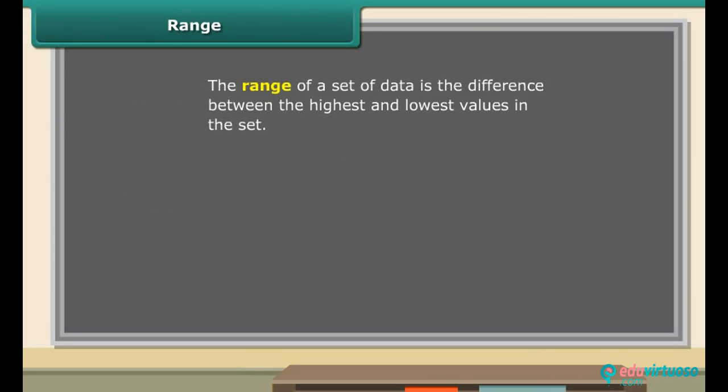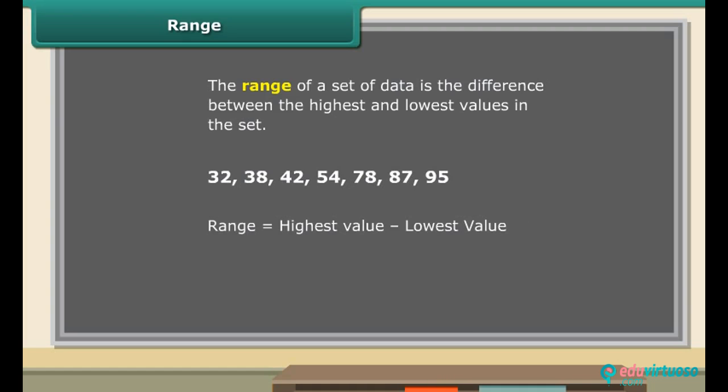The range of a set of data is the difference between the highest and lowest values in the set. To find the range, first order the data from least to greatest. Then, subtract the smallest value from the largest value in the set. So children, now you can also find the range of any set of data.